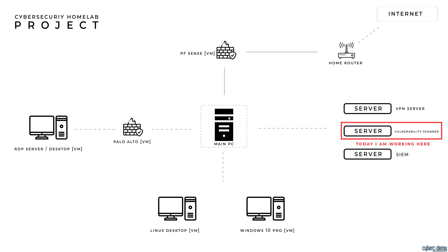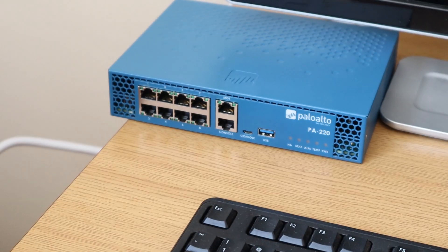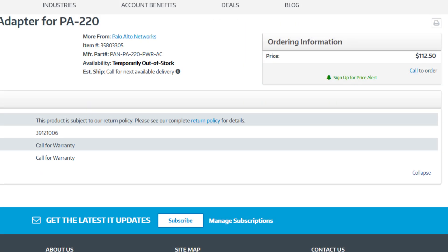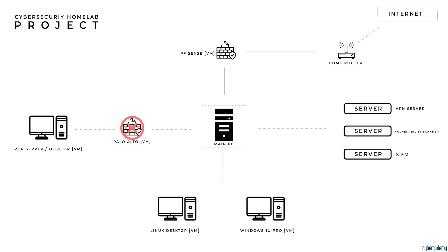Before I get into the specific steps, I want to add some edits to the cybersecurity home lab project topology. One element I'm going to edit is the Palo Alto PAN-OS firewall. I have the actual hardware, but I don't have the power cord — which is pretty expensive as this is an industry-grade firewall. Additionally, we're going to be adding a new machine: a Windows XP machine, very outdated of course, but you'll see the reason why we're using it today.